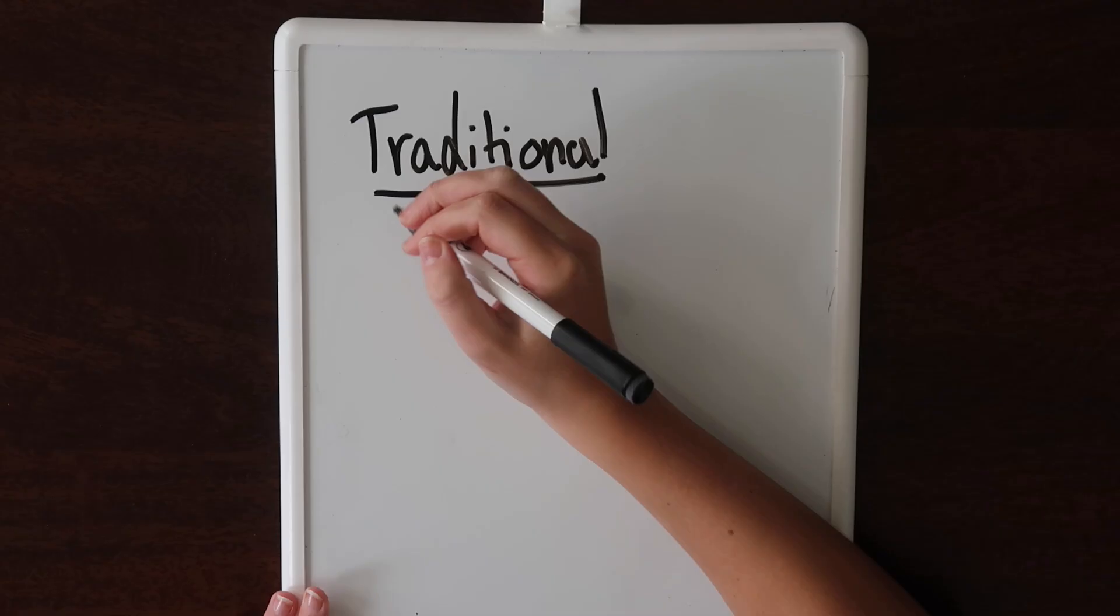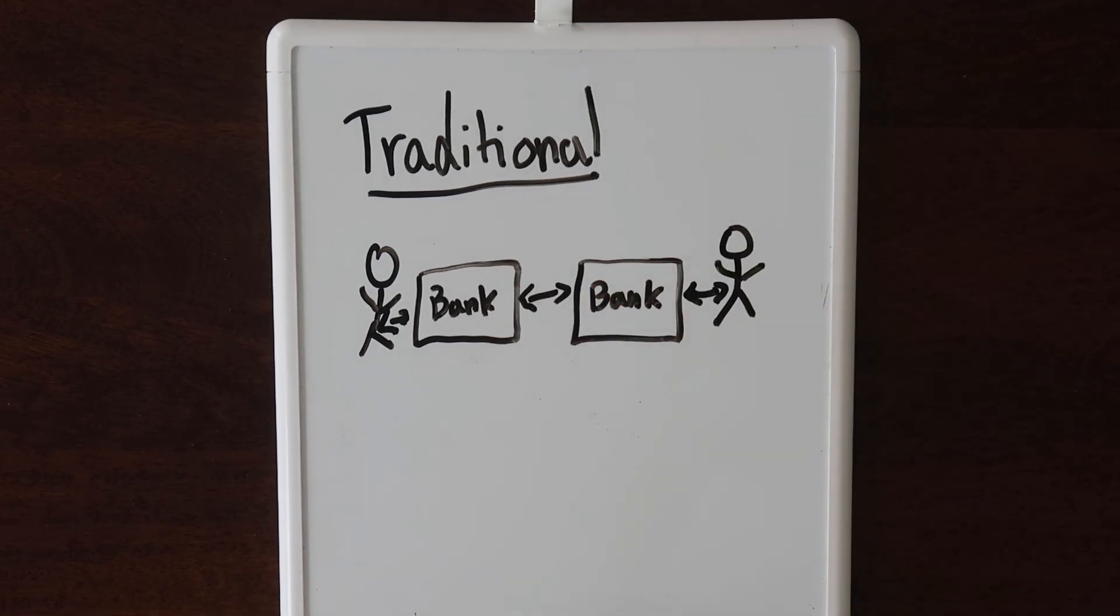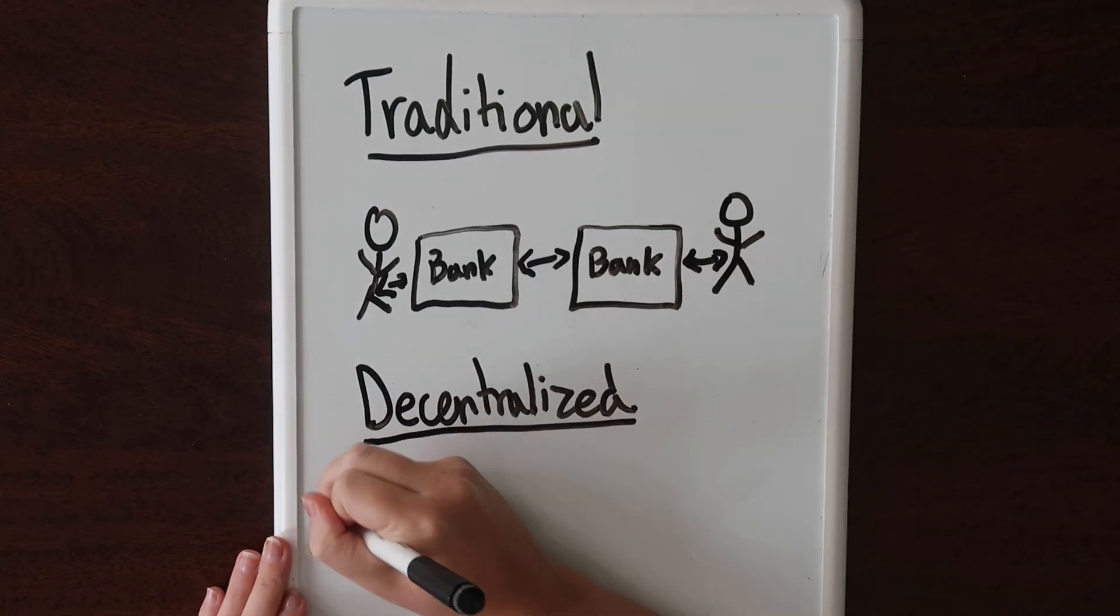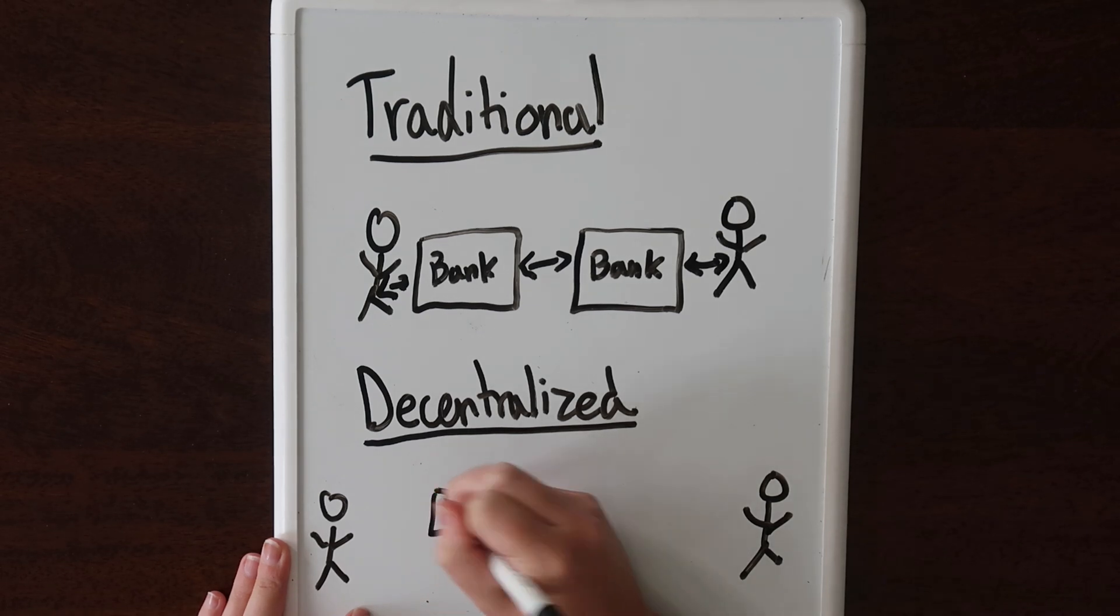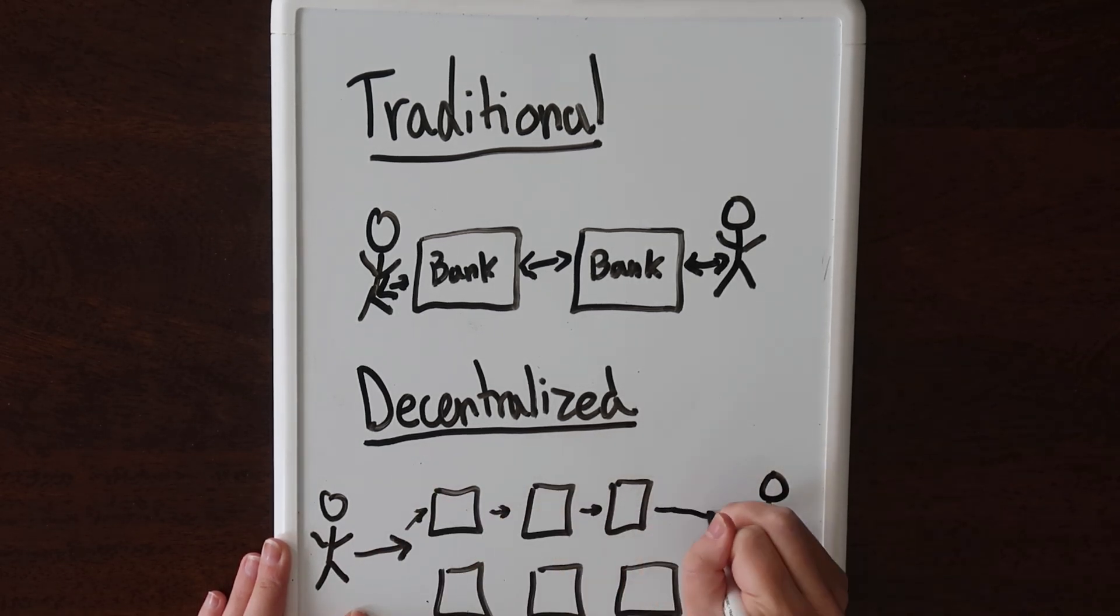With the way we exchange money today, transactions are validated by your bank, a single authority, because they know how much money is in your account. They have the only copy of the ledger. With Bitcoin, there's not just one computer that holds the ledger. In fact, every computer in the network keeps a copy of the ledger and validates each transaction.